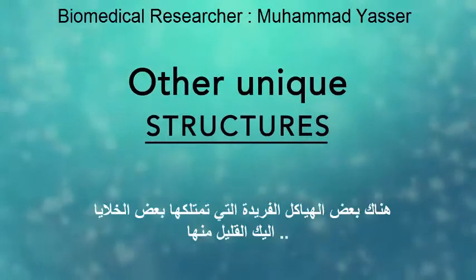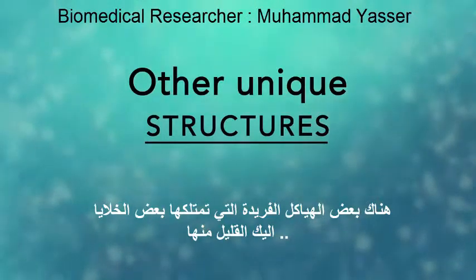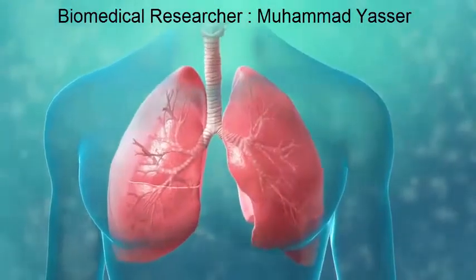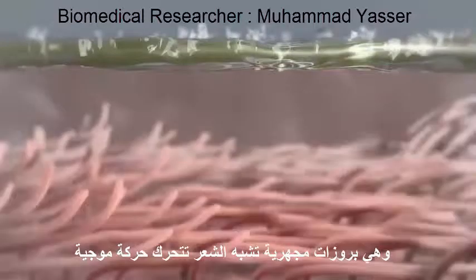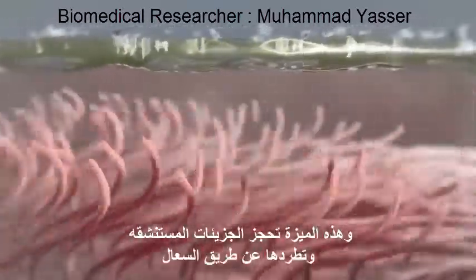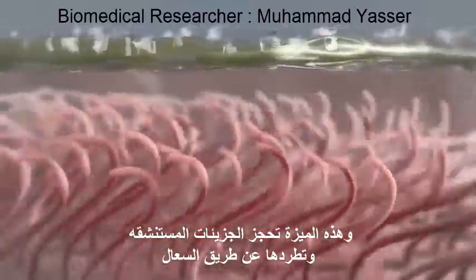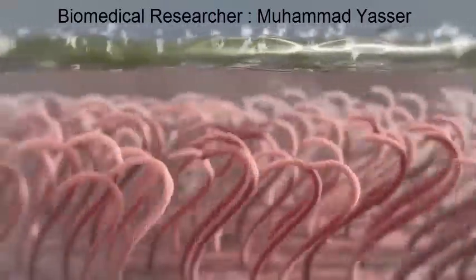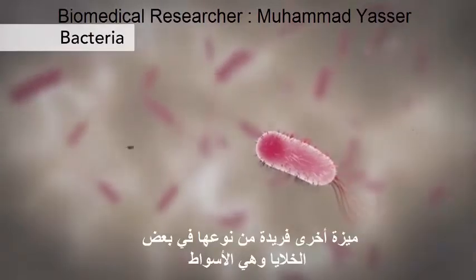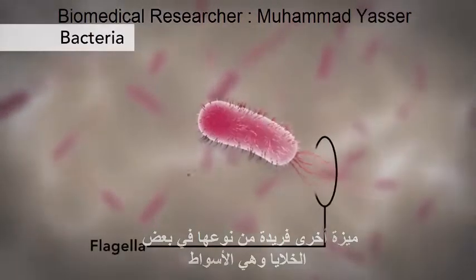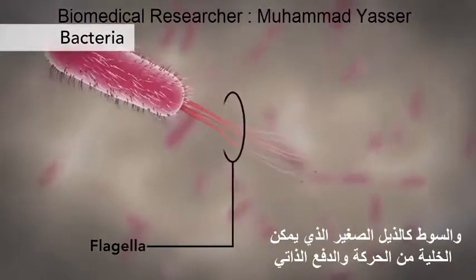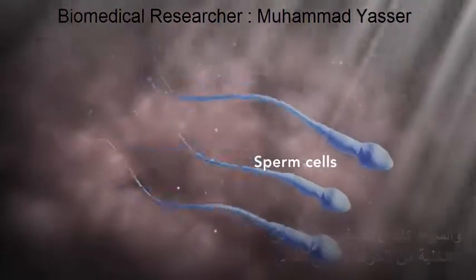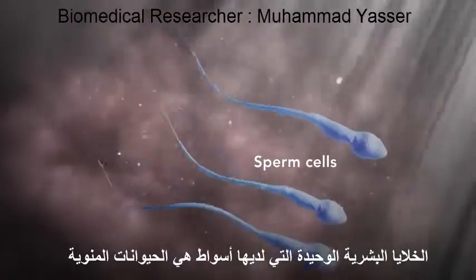There are many other unique structures that only some cells have. In humans, for example, the respiratory tract is lined with cells that have cilia. These are microscopic, hair-like projections that can move in waves. This feature helps trap inhaled particles in the air and expels them when you cough. Another unique feature in some cells is flagella. Some bacteria have flagella. A flagellum is like a little tail that can help a cell move or propel itself. The only human cell that has a flagellum is a sperm cell.